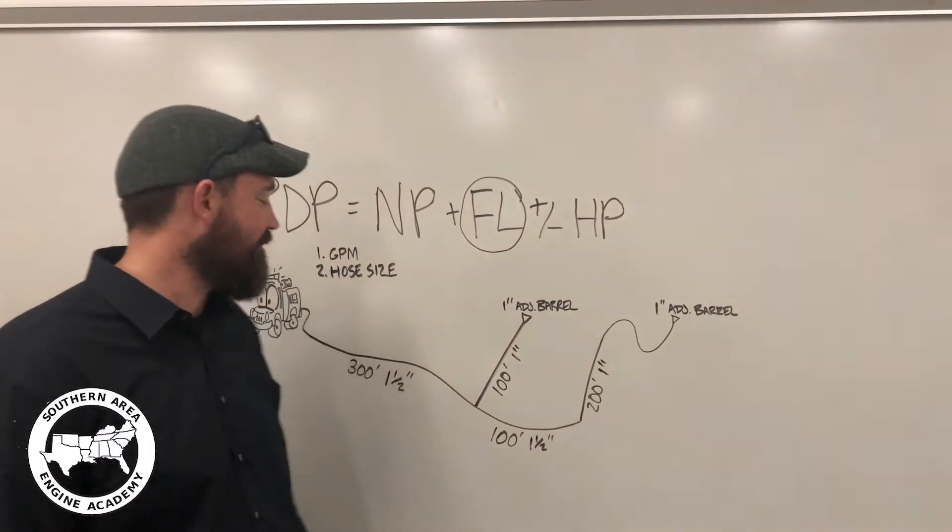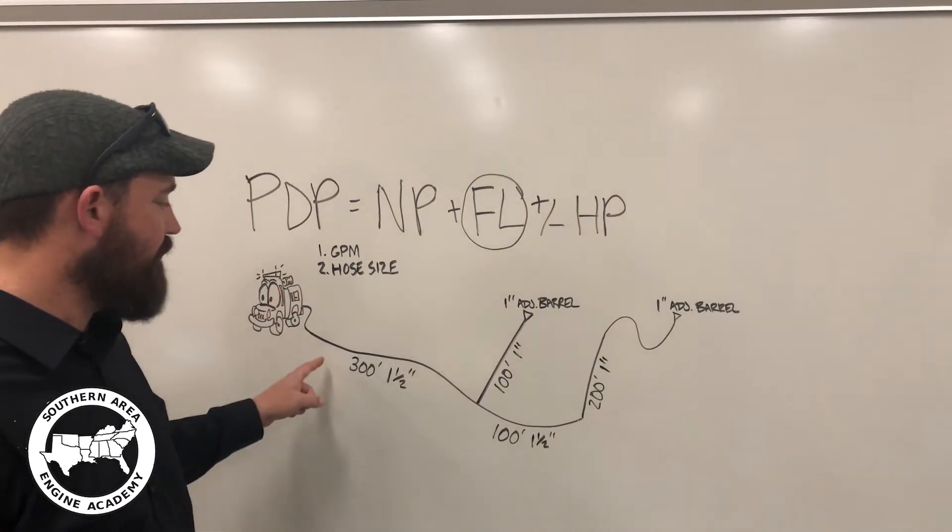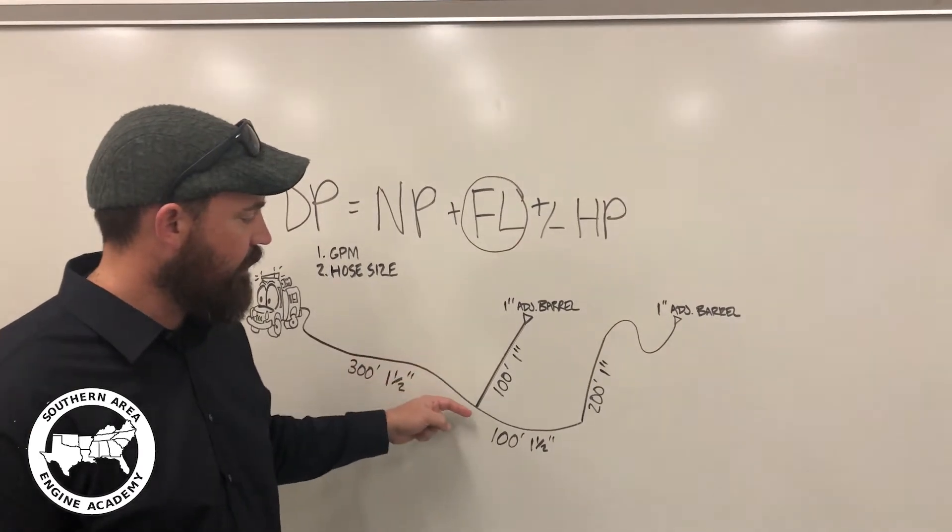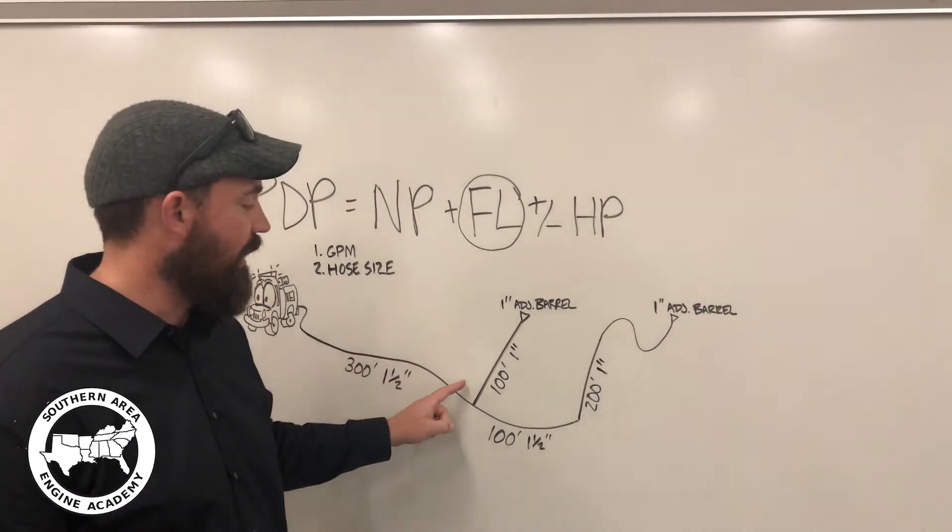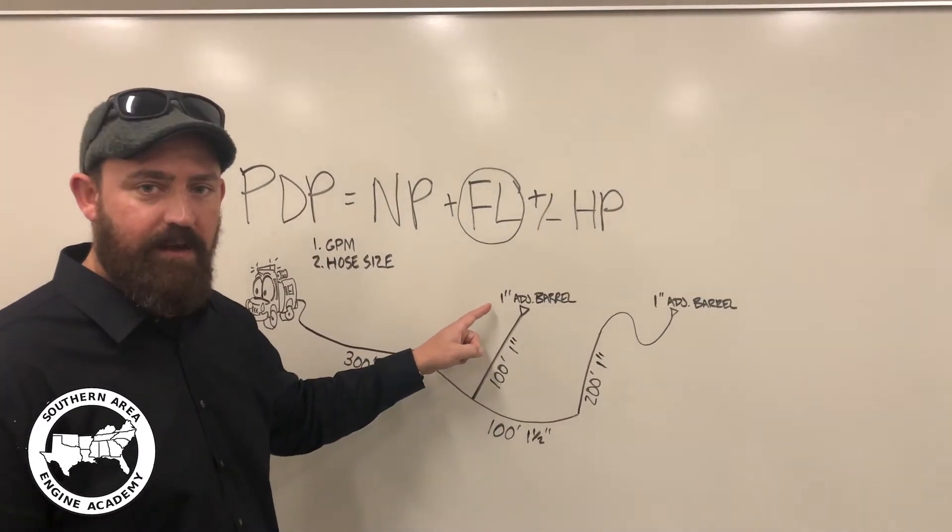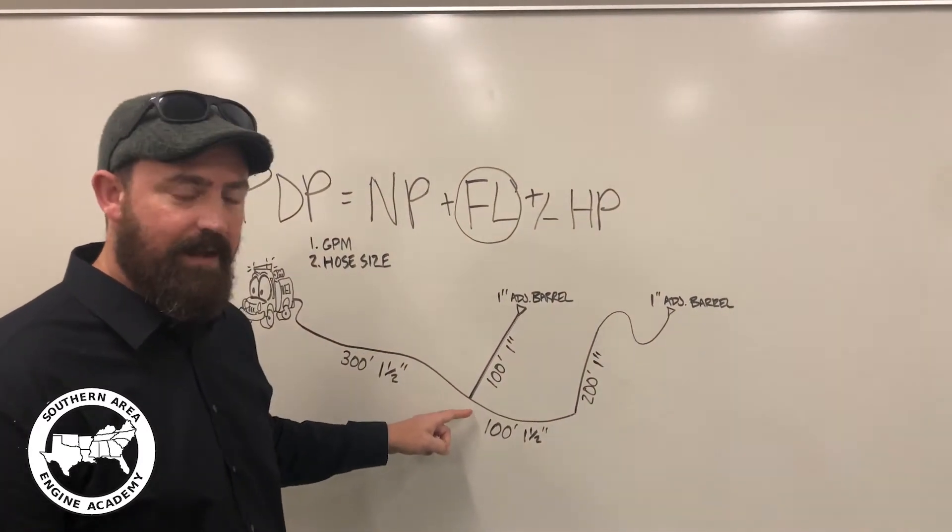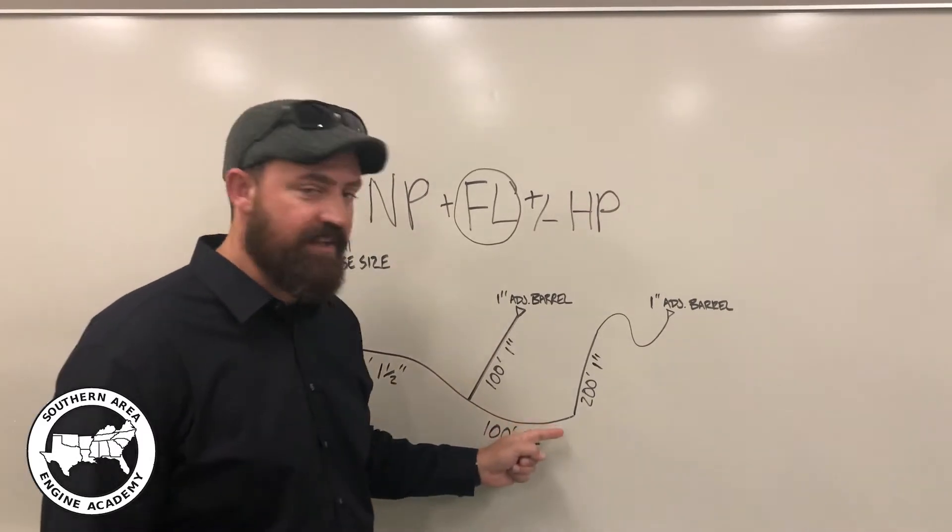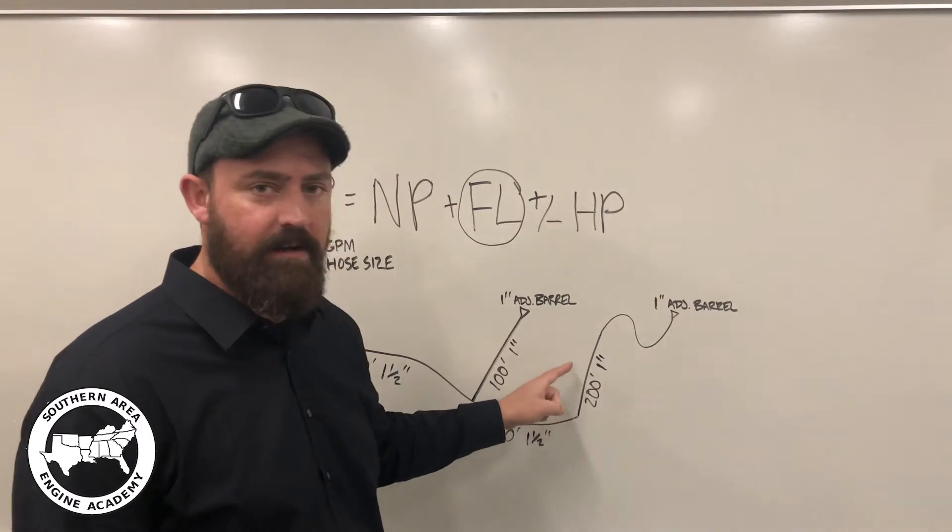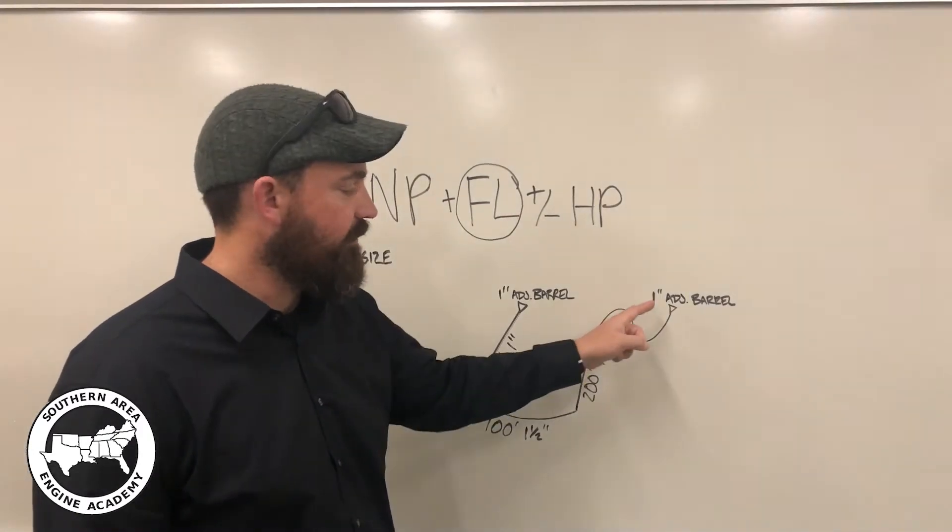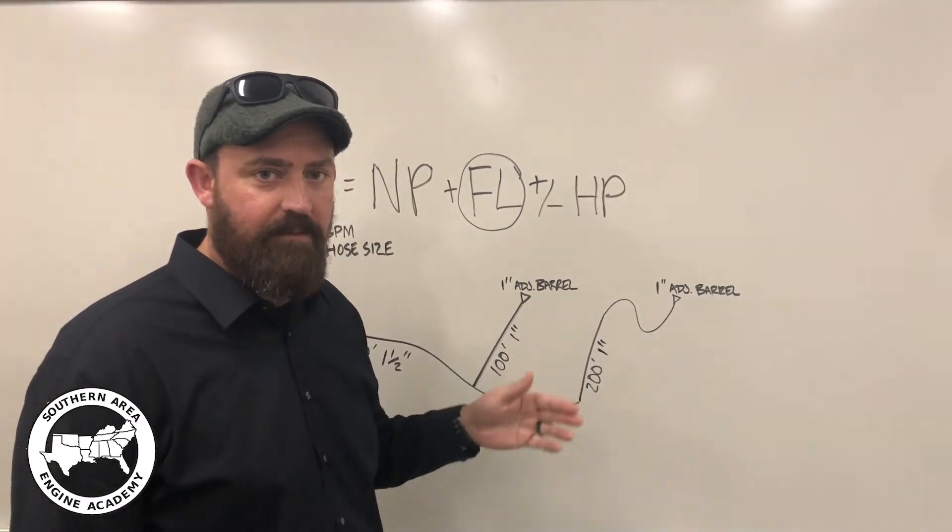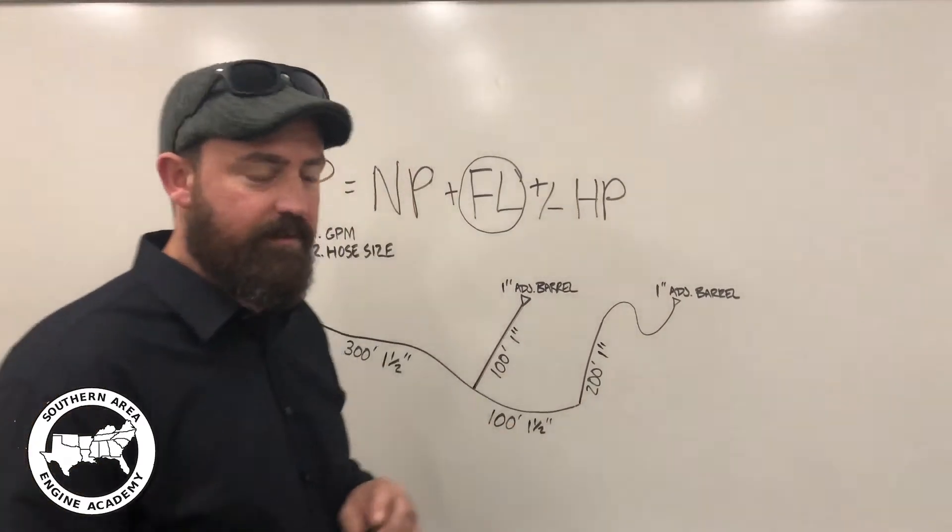So here's our problem. Now, we have 300 feet of inch and a half trunk line going to a lateral of one inch, supplying a one inch adjustable barrel nozzle. Past that, we have another 100 feet of inch and a half trunk that's supplying another lateral that's 200 feet of one inch hose, also with a one inch adjustable barrel. And so I'm just going to work this problem out, get the friction loss, and then we'll go over the rules of thumb later.